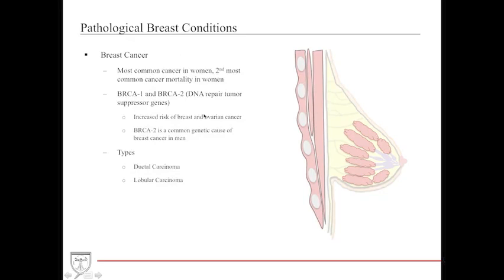Breast cancer is so important today because it is the most common cause of cancer in women and the second most common cause of mortality in women. BRCA1 and BRCA2 are DNA tumor suppressor genes that confer increased risk of breast and ovarian cancer, leading many individuals to get prophylactic mastectomies, though not all breast cancers are related to these genes. In a unique clinical situation where a man suspects breast cancer, BRCA2 is usually the high clinical suspicion. The two types of breast cancers are ductal carcinoma and lobular carcinoma.